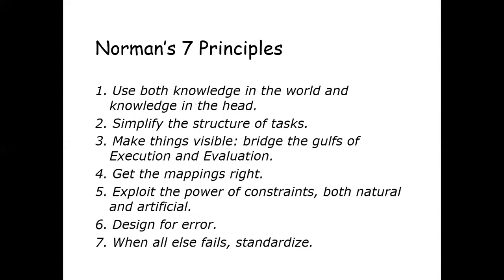Next, Norman's seven principles. First, use both knowledge in the world and knowledge in the head — provide the necessary knowledge within the environment and ensure operations are transparent. Second, simplify the structure of tasks. Third, make things visible — bridge the gulfs of execution and evaluation. Fourth, get the mapping right. Fifth, exploit the power of constraints, both natural and artificial — constraints make it impossible to do anything but the correct action in the correct way. Sixth, design for error — anticipate errors users could make and design recovery into the system. Seventh, when all else fails, standardize.